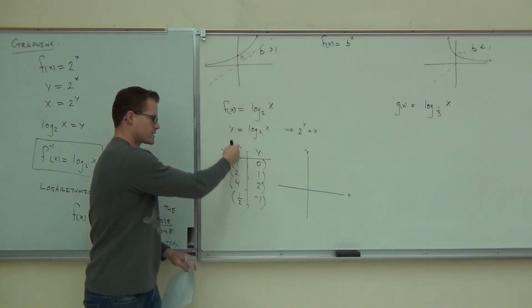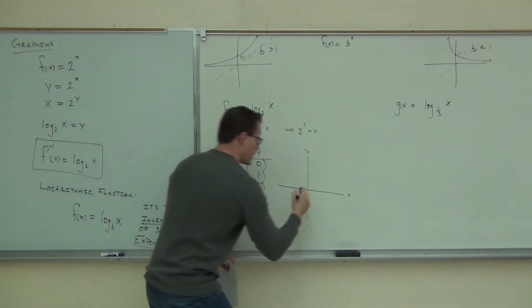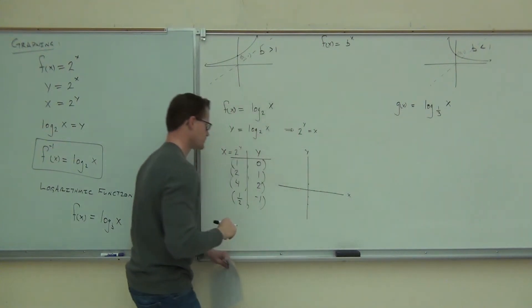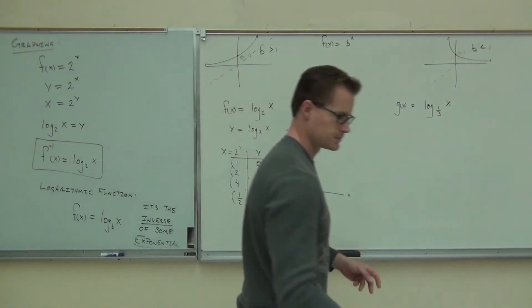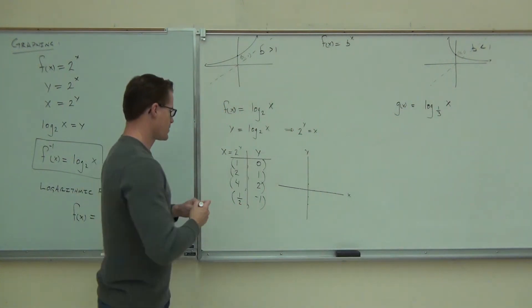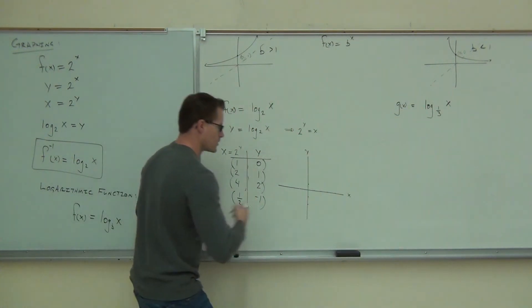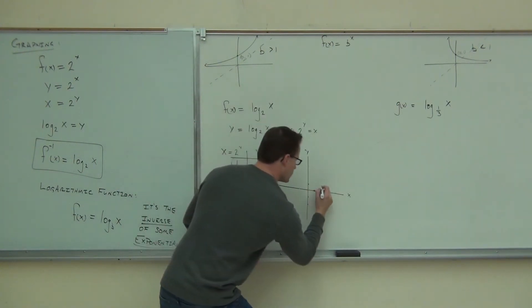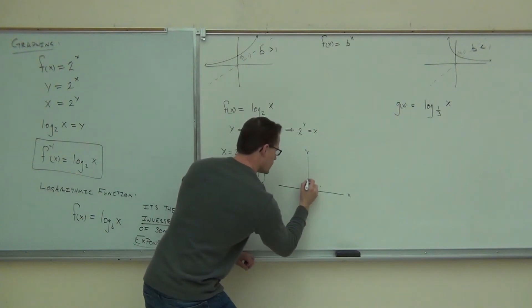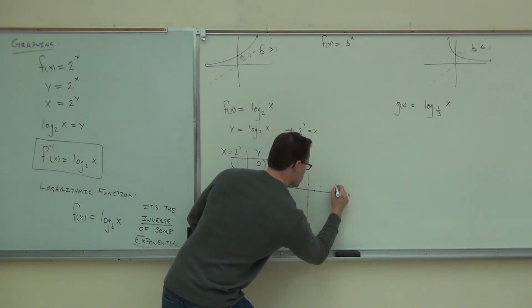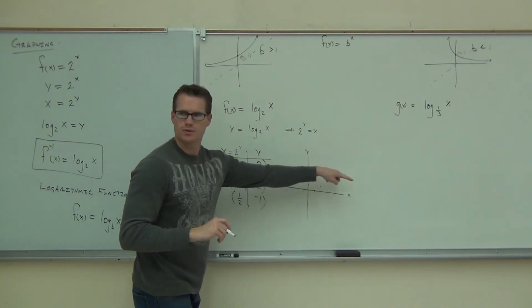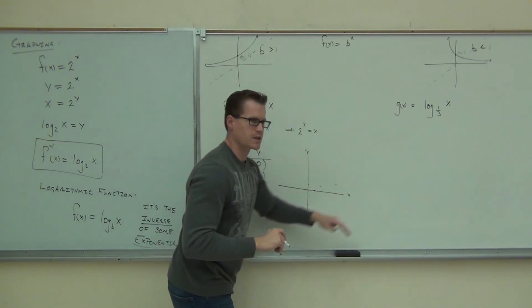Don't lose track of your x's and y's. They're still in the correct order. If I plot these points, I get 1, 0. I get 2, 1. I get 4, 2. Do you see what that side of the graph looks like? It's going to go, looks like that.